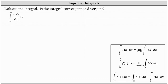We want to evaluate the integral and then determine if it is convergent or divergent. The given integral is an improper integral because the upper limit of integration is unbounded, or approaching infinity. We begin by writing the improper integral as a limit.